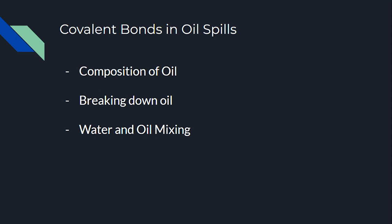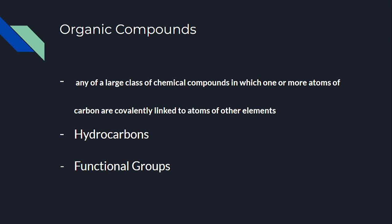The third topic is organic compounds. Organic compounds are defined as any of a large class of chemical compounds in which one or more atoms of carbon are covalently linked to atoms of other elements. A major part of organic compounds are hydrocarbons, defined as an organic compound consisting entirely of hydrogen and carbon. Functional groups also play a very prominent role in organic compounds, as they are substituents in a molecule that determine the molecule's characteristics in chemical reactions.